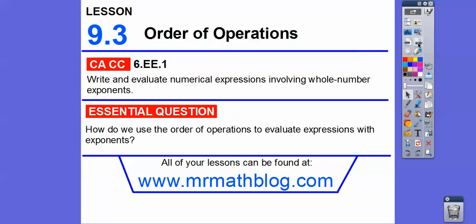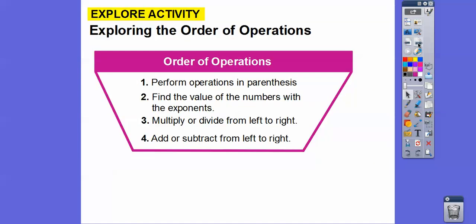Here's our question: how do we use the order of operations to evaluate expressions with exponents and parentheses?